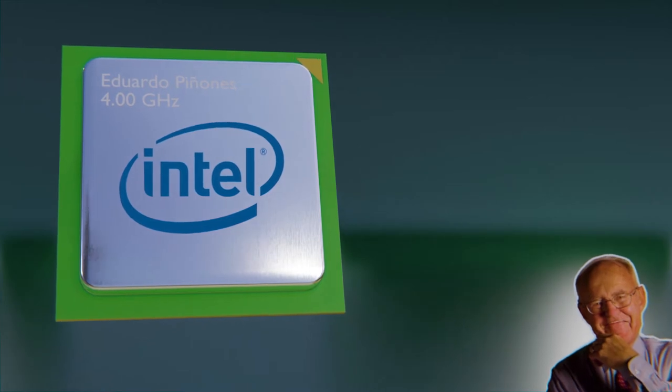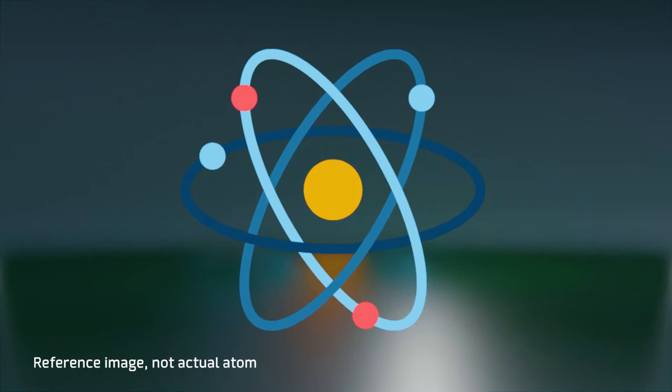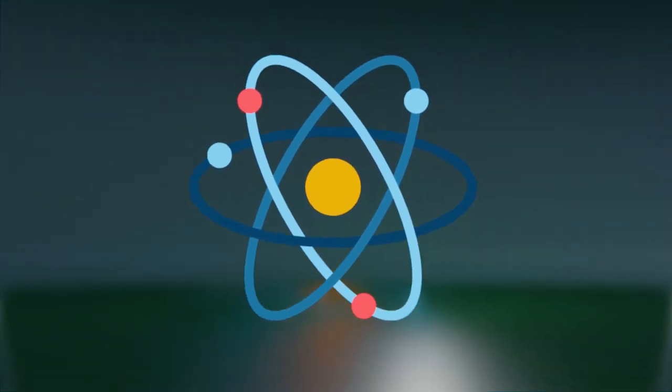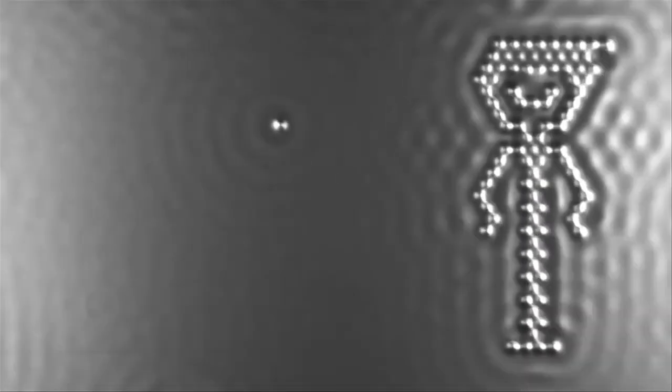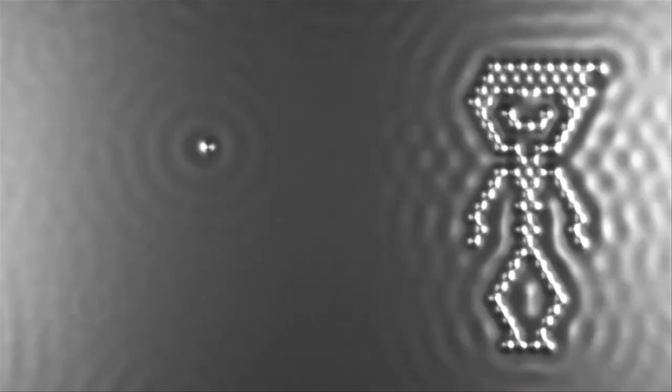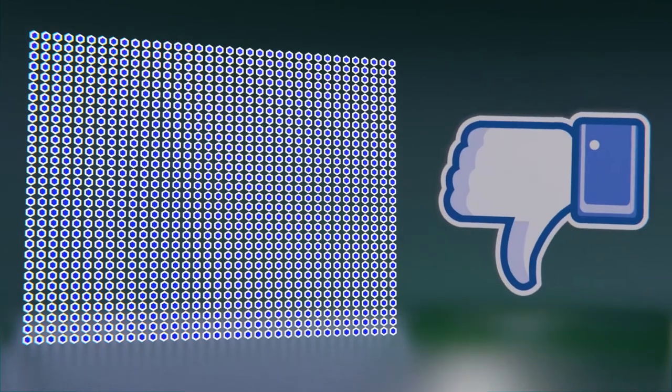There are sophisticated technologies with the ability to precisely position atoms. You heard well, individual atoms. In fact, in 2013, IBM released a short film called The Boy and His Atom, where each point was indeed an iron atom. Although having the ability to do this in a laboratory doesn't necessarily mean that it is viable for mass production.